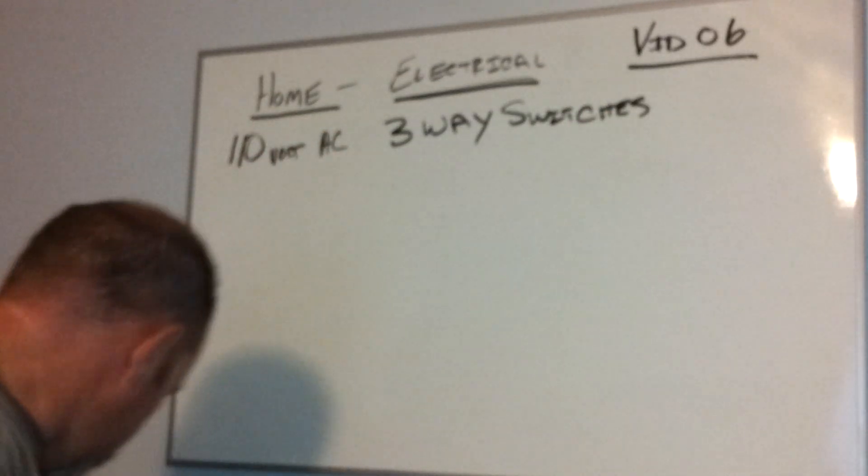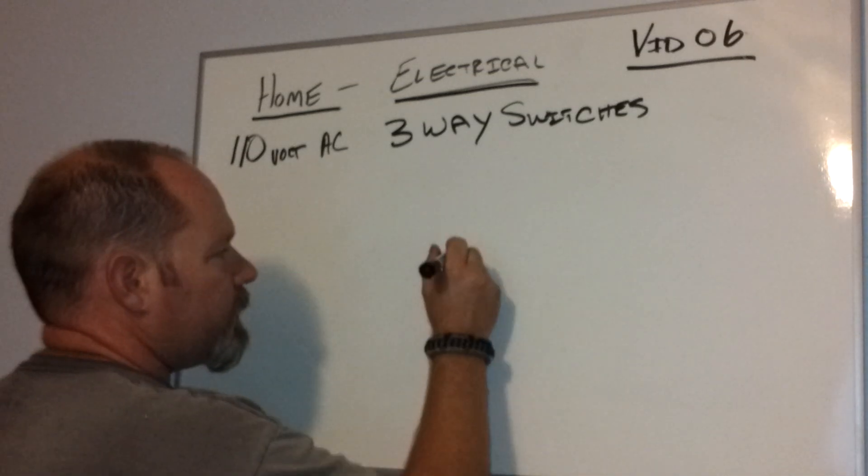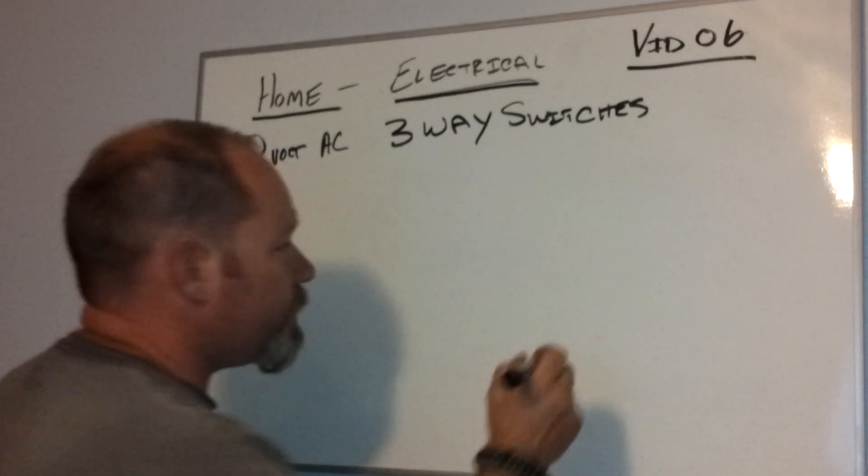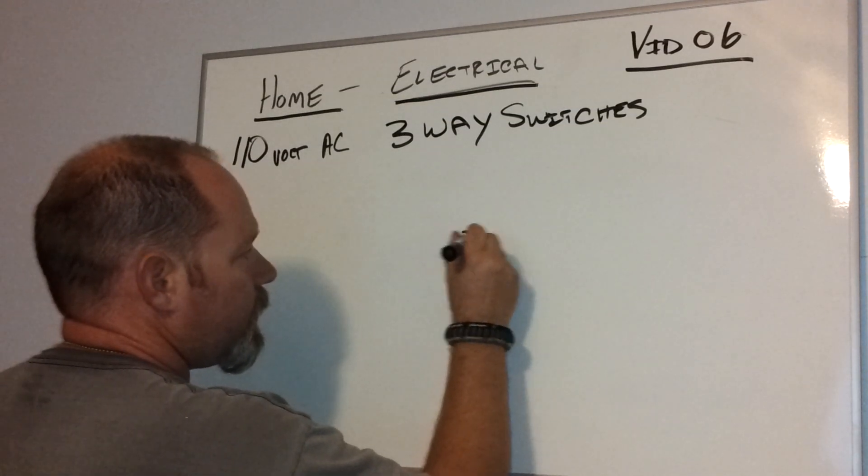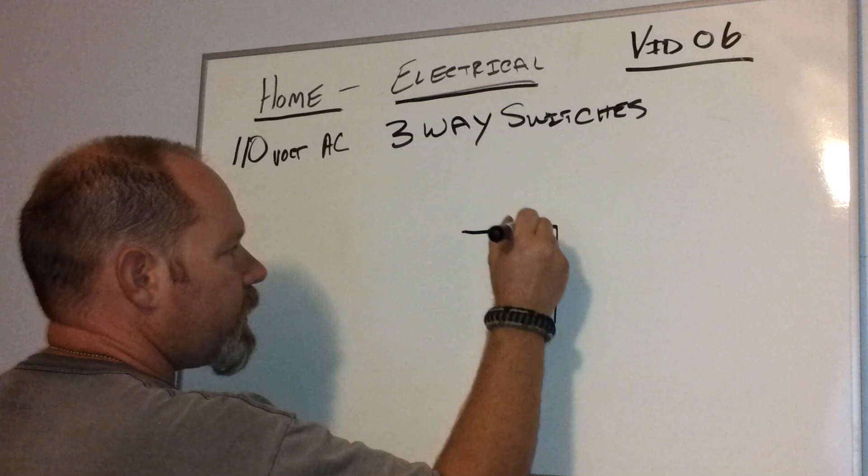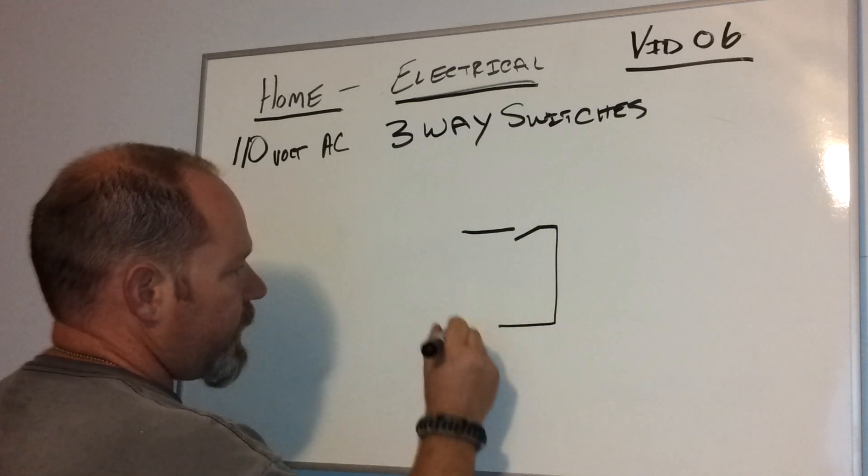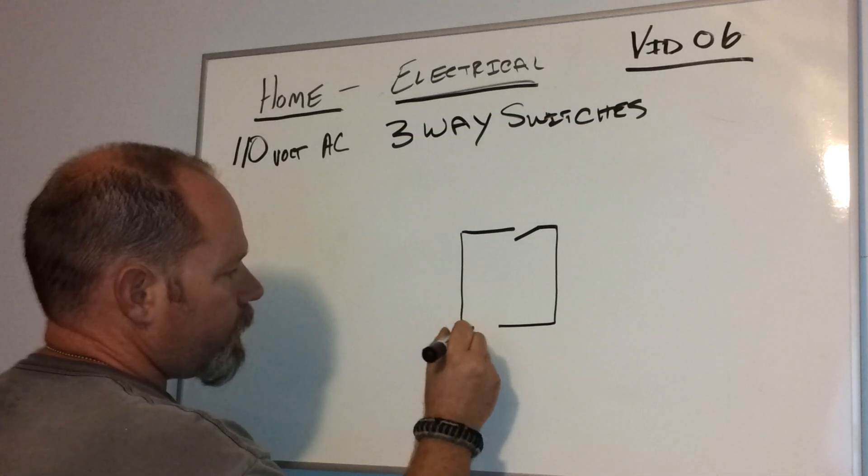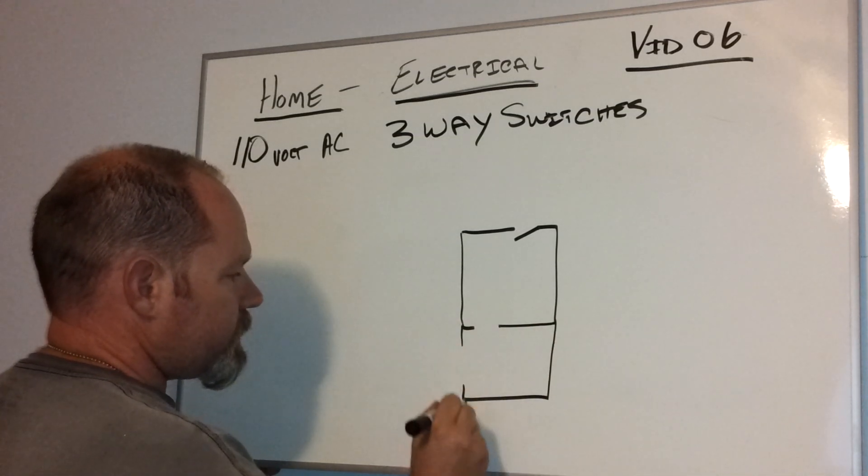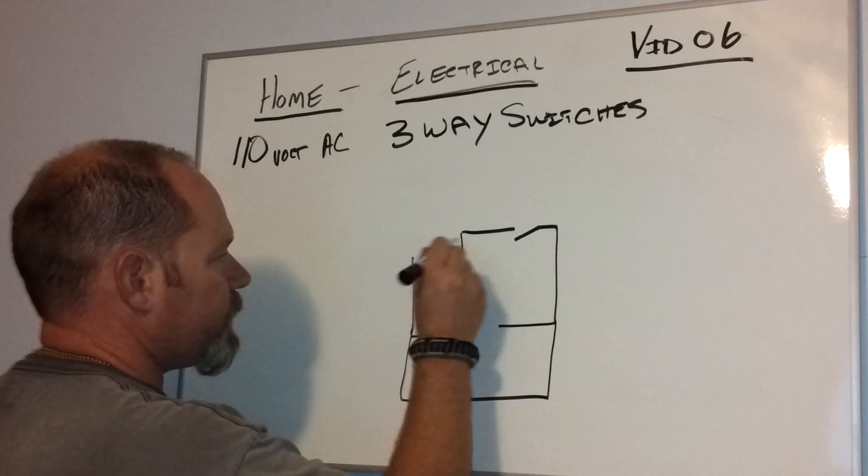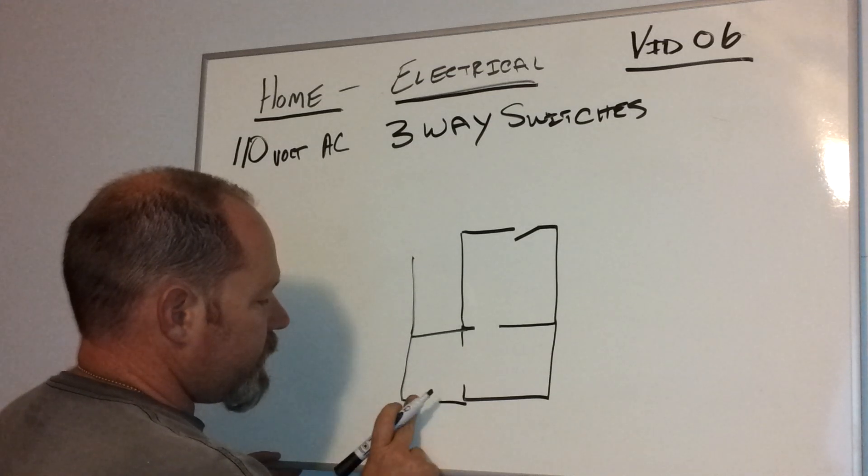This three-way switch comes into play when you have, let's say, I'm going to draw a bird's eye view of a house real quick. Let's say the front of the house, and here's your door coming into the house. And then let's say you have a dining room here, and let's say your kitchen's here. Who knows what's over here, maybe stairs or something. But anyway, let's say your back door is here in the kitchen.